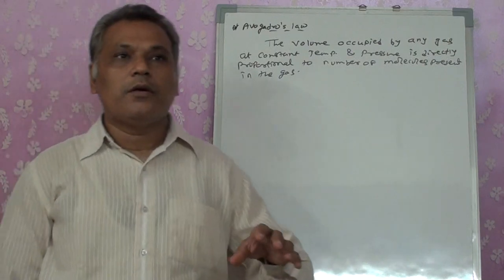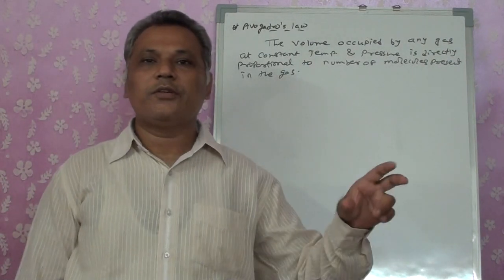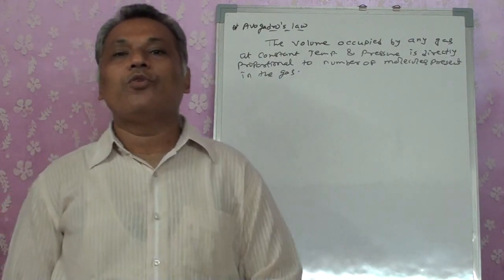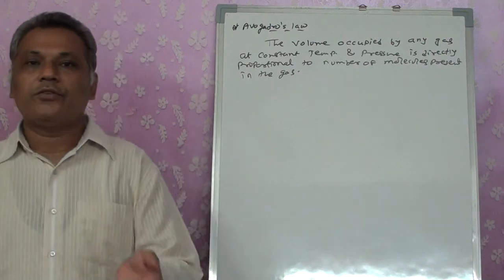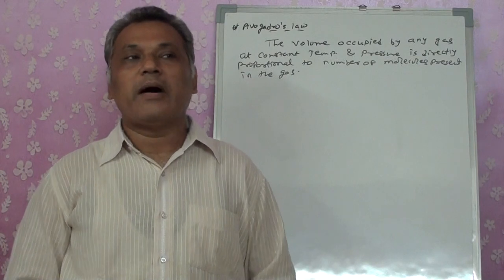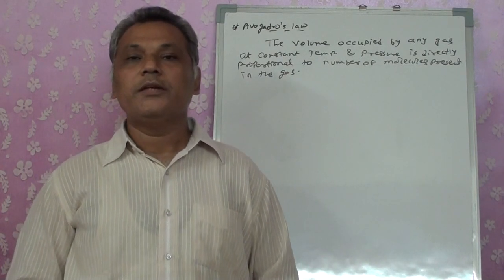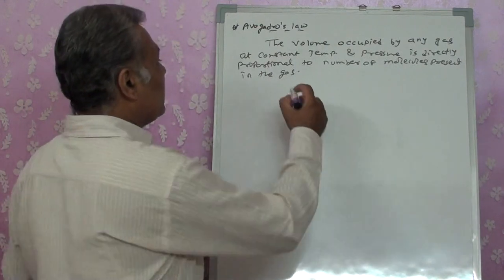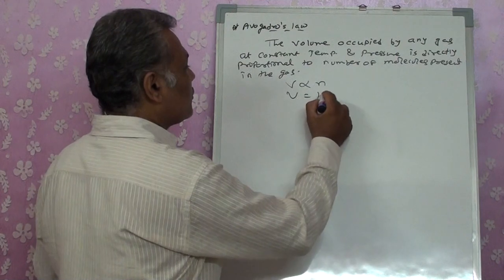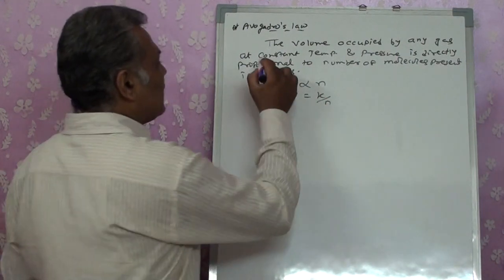For example, if one mole of hydrogen gas is taken at 25°C and one atmospheric pressure, the volume occupied will be the same as one mole of oxygen gas. Although hydrogen and oxygen have differences in size and mass, the volume occupied by them will be the same. This is represented as V is proportional to N, or V = kN.